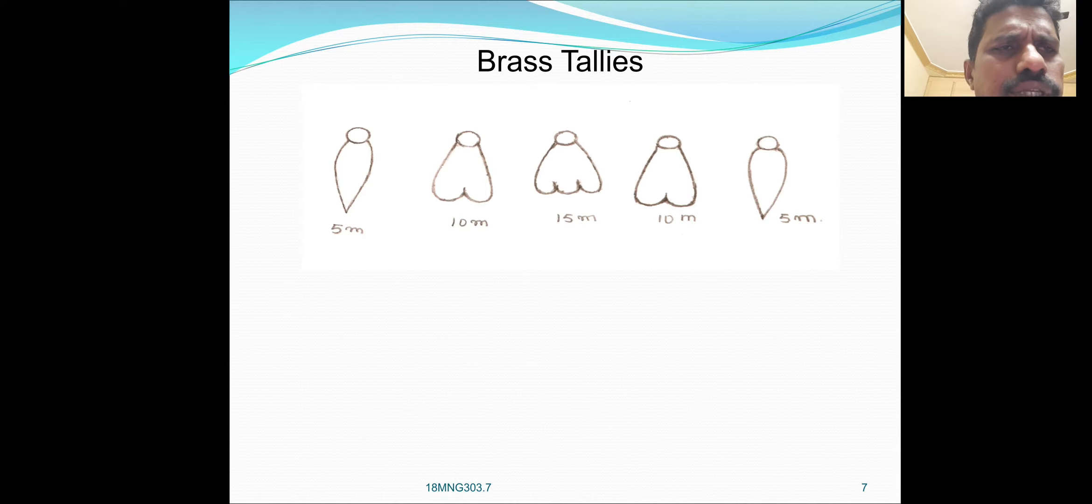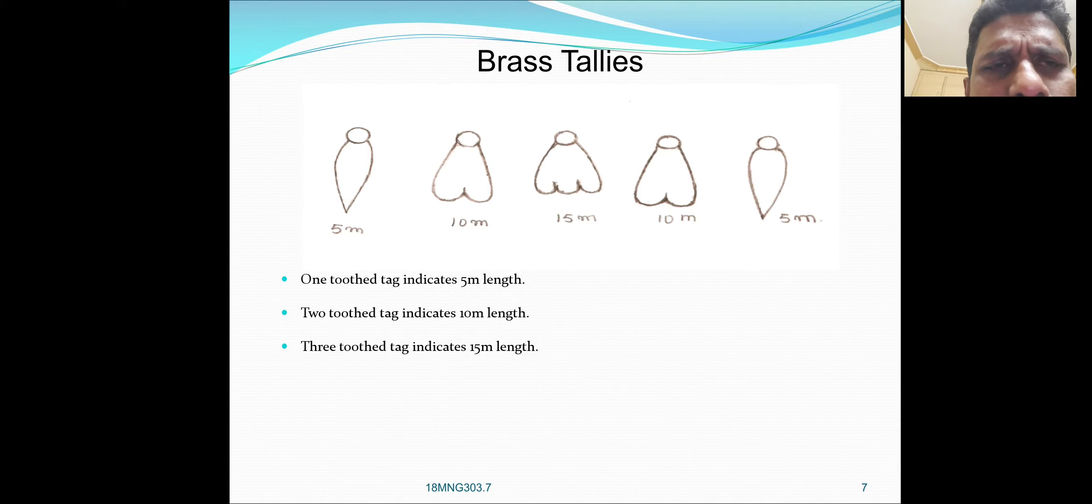Brass tags at 5 meters, 10 meters, 15 meters are marked accordingly. One toothed tag indicates five meters length, two toothed tag indicates 10 meters length, three toothed tag indicates 15 meters length.